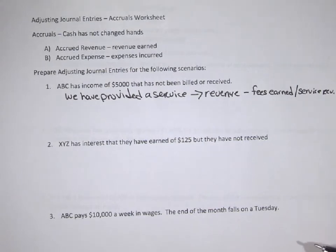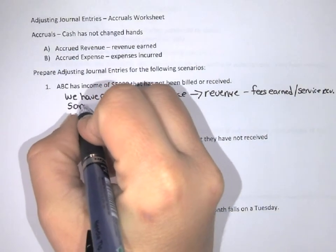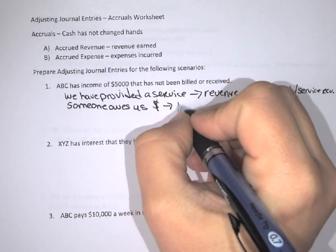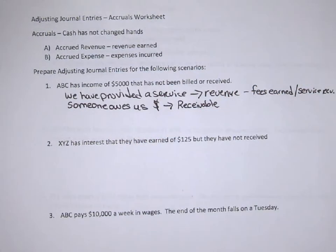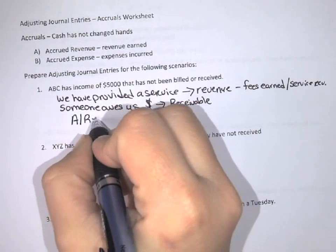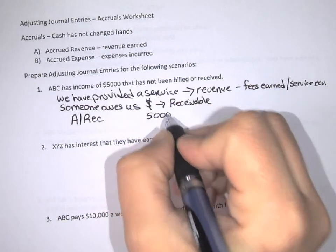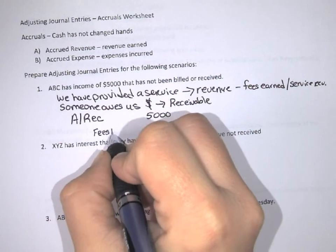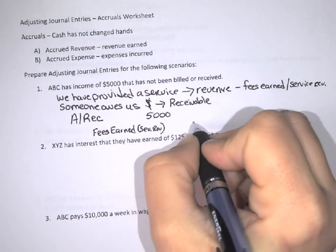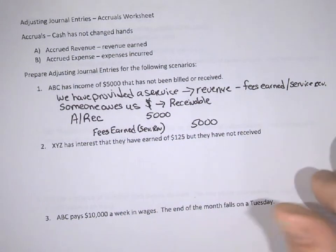Even though we haven't billed for it yet, we still owe that money because we haven't received a payment yet. So someone owes us money, and that is going to be a receivable that we are going to be looking at because we are going to receive that money in the future — we haven't received it yet. So in this particular case, we will increase our accounts receivable account by that five thousand dollars and we'll also need to increase our revenue accounts by that five thousand dollars. Accounts receivable is the debit; fees earned is our credit account.